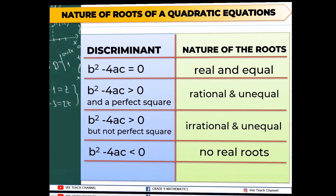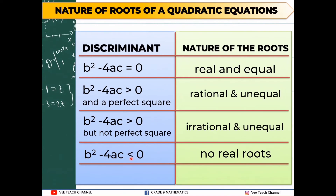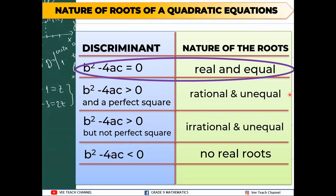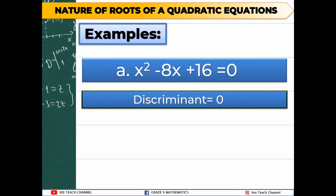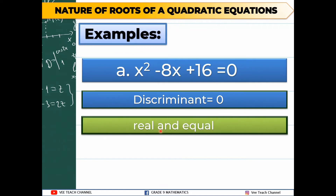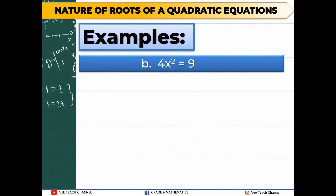Since we already have our discriminant, let's identify the nature of the roots. Referring to our table, the discriminant is equal to 0, therefore the nature of the roots is real and equal. So for example number 1, the discriminant is 0 and the nature of the roots is real and equal. Remember, once we get the discriminant, that's when we can determine the nature of our roots.